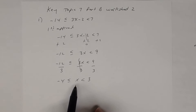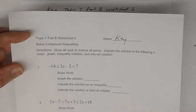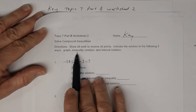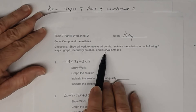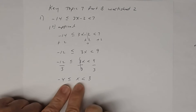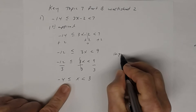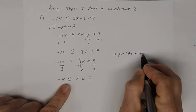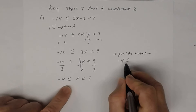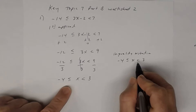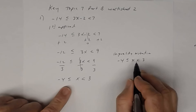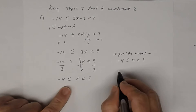You have to indicate the solution in three different ways: graph the solution, indicate it as inequality notation, and indicate it in interval notation. The inequality notation is this: your solutions are going to be between negative 4 — including negative 4 because there's an equal sign — and 3, not including 3 because there's no equal sign.